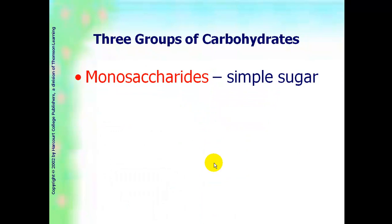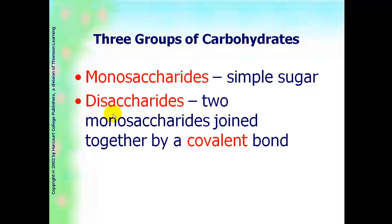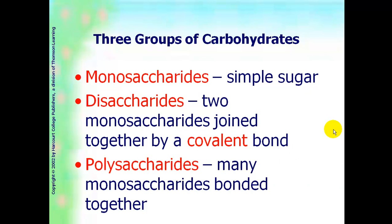There are three groups of carbohydrates. First one is monosaccharides. Saccharides means sugar. Mono means simple or one. Disaccharides. Di means two. So, those are two monosaccharides that are joined together by a covalent bond. And then you have polysaccharides, which means many or more than two monosaccharides bonded together by a covalent bond.